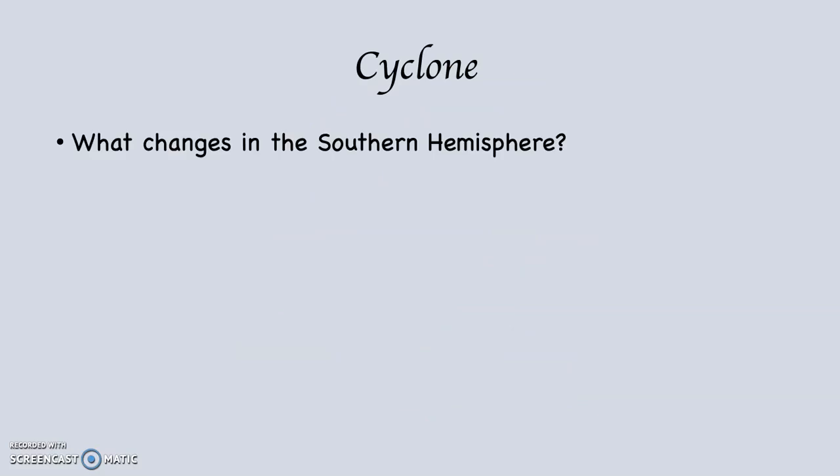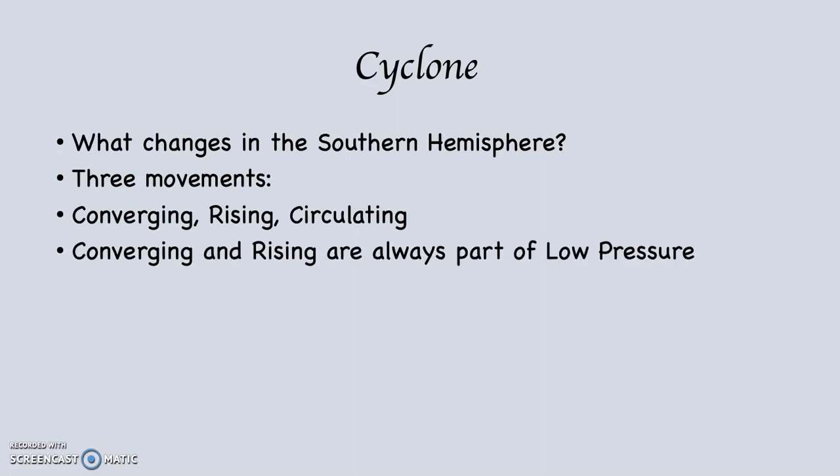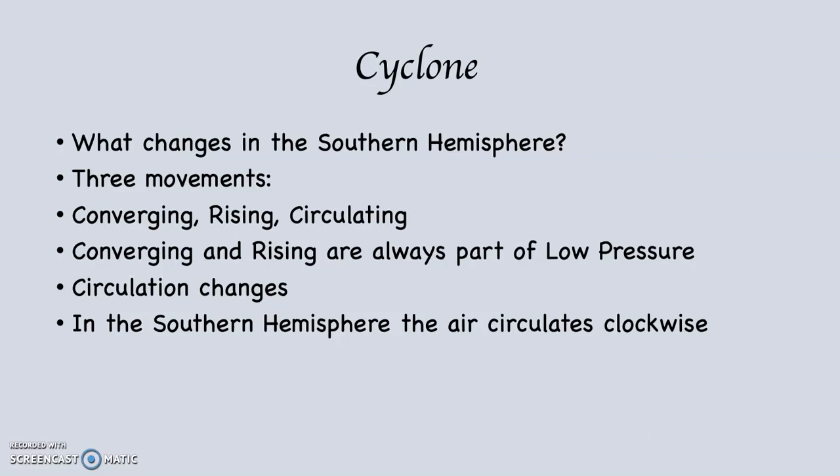In the Southern Hemisphere there are still three movements: converging, rising, and circulating. Converging and rising are always part of low pressure, cyclonic systems — there's never a moment they are not present. What changes in the Southern Hemisphere is circulation. In the Southern Hemisphere, the air circulates clockwise and inward. So in the Northern Hemisphere it's counterclockwise and inward; in the Southern Hemisphere it's clockwise and inward.